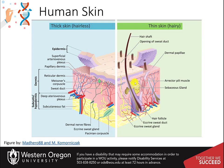A sebaceous gland is a microscopic exocrine gland in the skin that opens into a hair follicle to secrete an oily or waxy matter called sebum, which lubricates the hair and skin of mammals. Sebum is made up of triglycerides, free fatty acids, wax esters, squalene, cholesterol esters, and cholesterol.